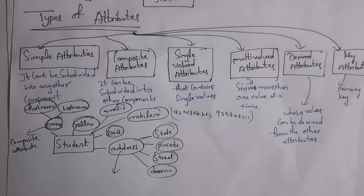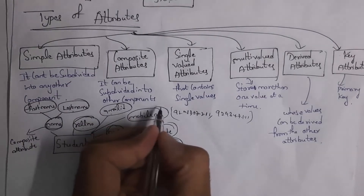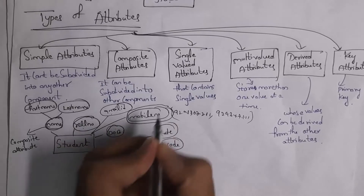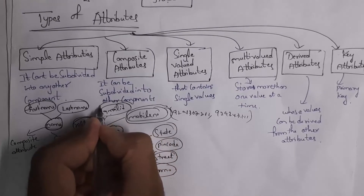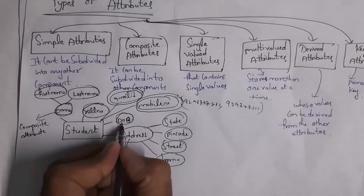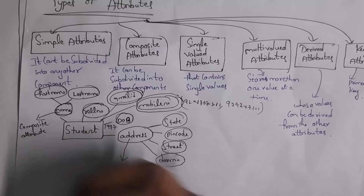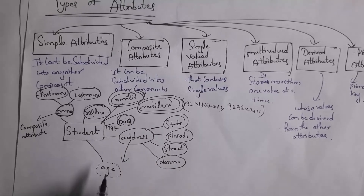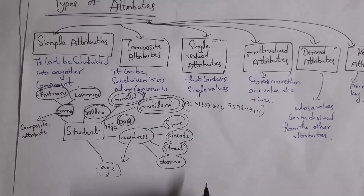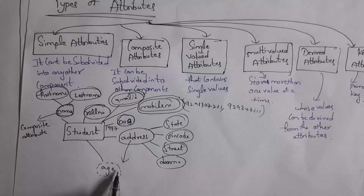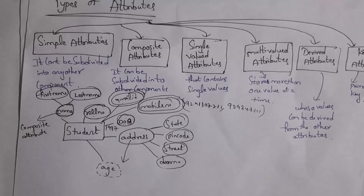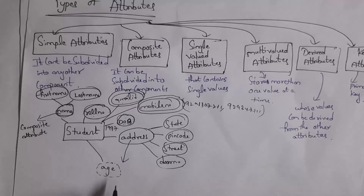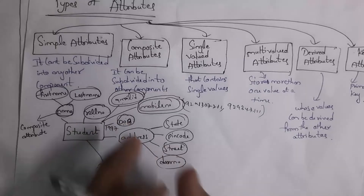We represent multi-valued attributes in double ellipse. Inside the double ellipse, I write mobile number and Gmail ID. Next is derived attribute. For example, for a student I have given date of birth as 1997. If I want to calculate age, I need date of birth. Based on date of birth and the present year, we can calculate age. So this age attribute depends on date of birth attribute — if any attribute depends on another attribute, we call it a derived attribute. We represent derived attributes in a dotted ellipse.